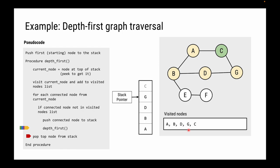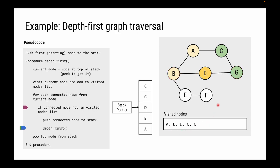With C exhausted, execution returns to the exploration of G. G has nowhere else to explore - C was visited and D is already in the visited list - so G is popped from the stack. Execution returns to D. D was connected to B and G, both now explored and visited, so D is popped from the stack and execution returns to B.